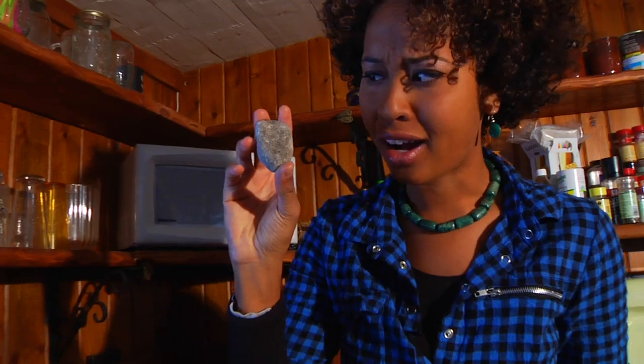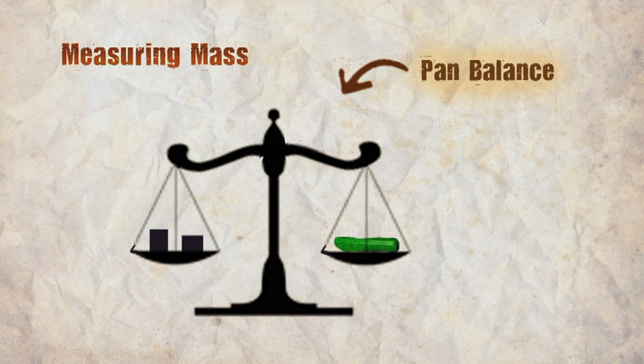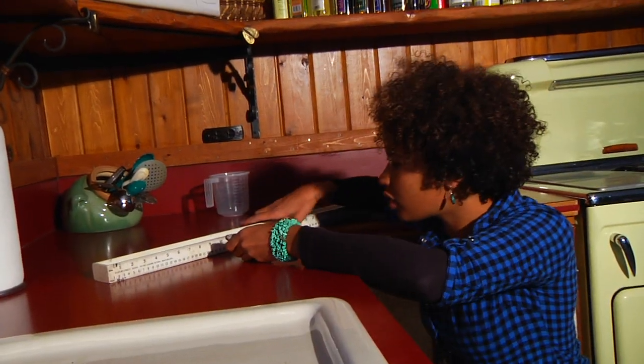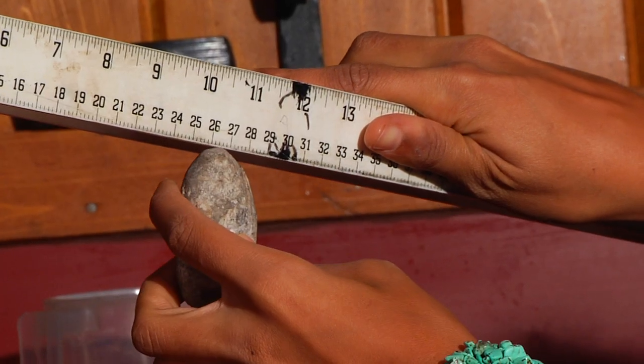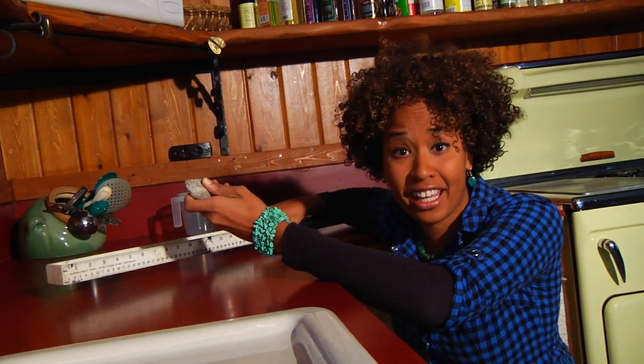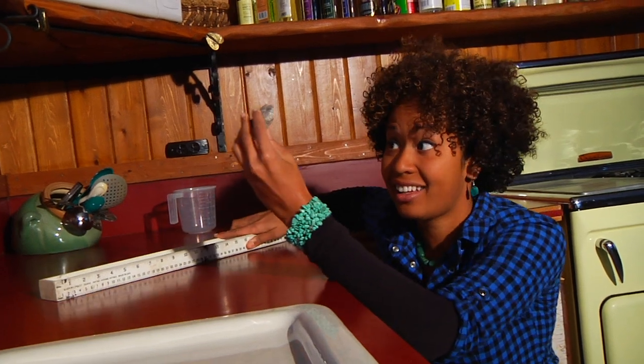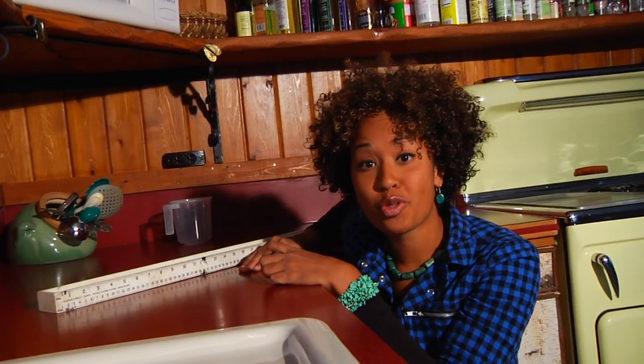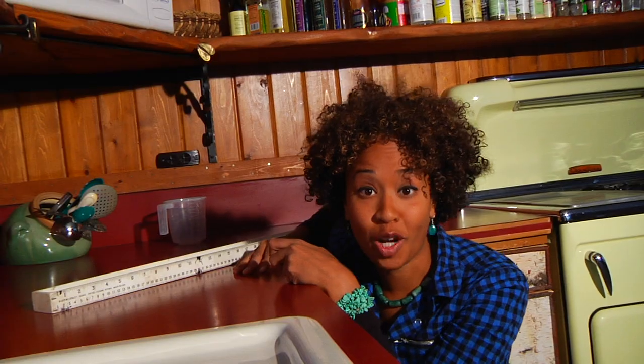Thanks, Hazen. Danny, you ready to get it started? So, calculating the volume of something like a cube, you need to know its length, width, and height. But what about measuring something like this rock? We can find its mass using a balance, but what if we need to know the density? You can't measure the length, width, and height using a ruler, and without those measurements, you can't calculate the rock's volume.